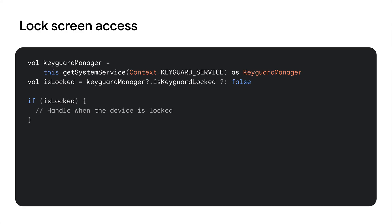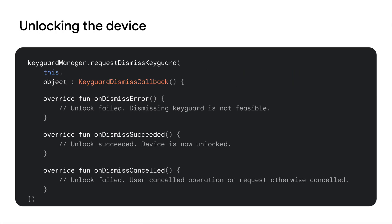To check if the app was launched from the lock screen, you can use KeyguardManager's isKeyguardLocked. If true, you know the device is locked and can respond accordingly. If you want to allow the user to unlock the device for full access to your app, you can use requestDismissKeyguard, as shown. Upon success, the app can allow the user full access to their historical notes and other sensitive features and settings.